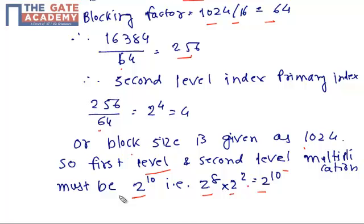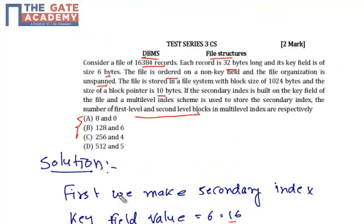So first level index blocks are 256 and second level blocks are 4. The correct option is C.